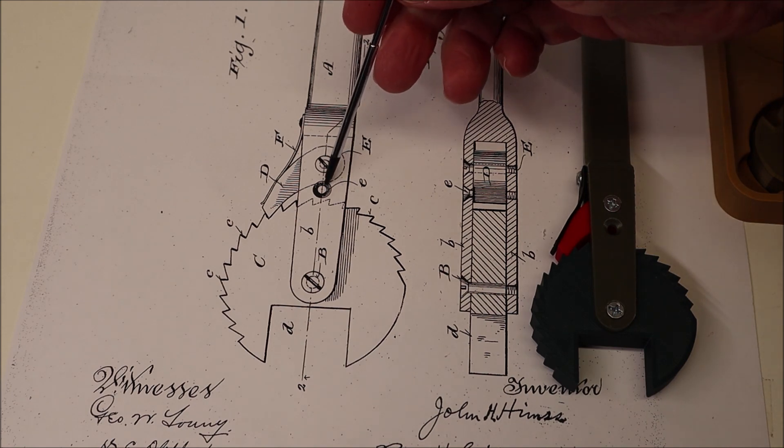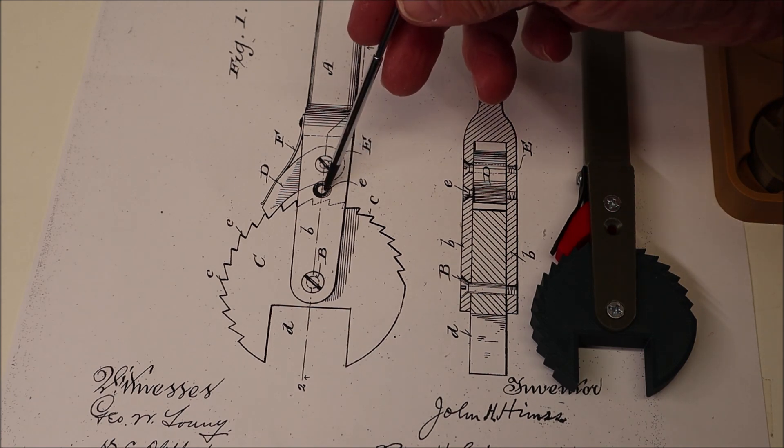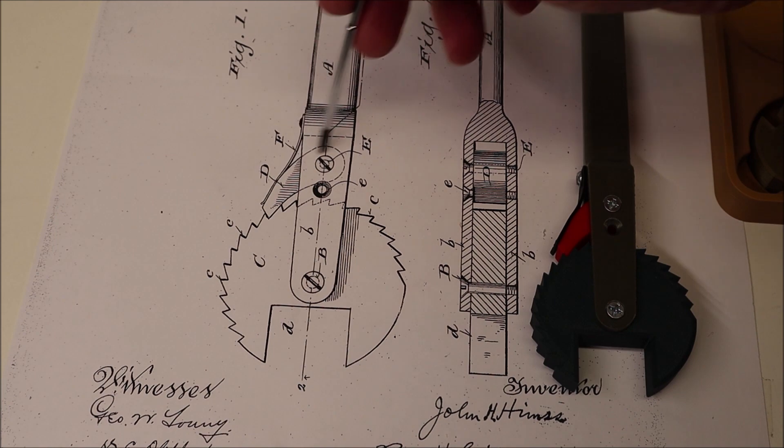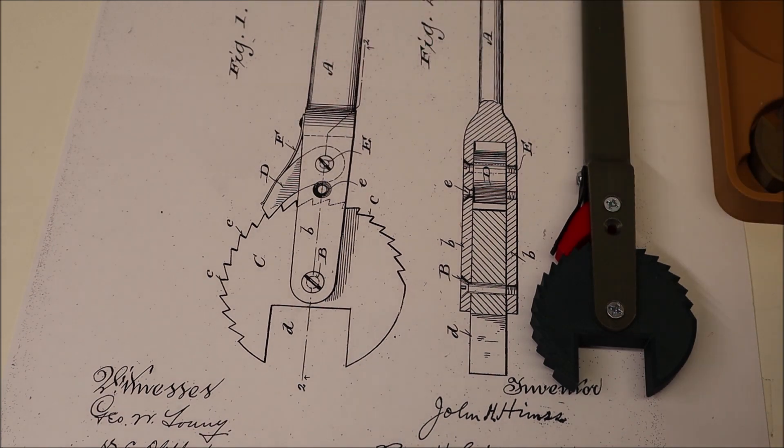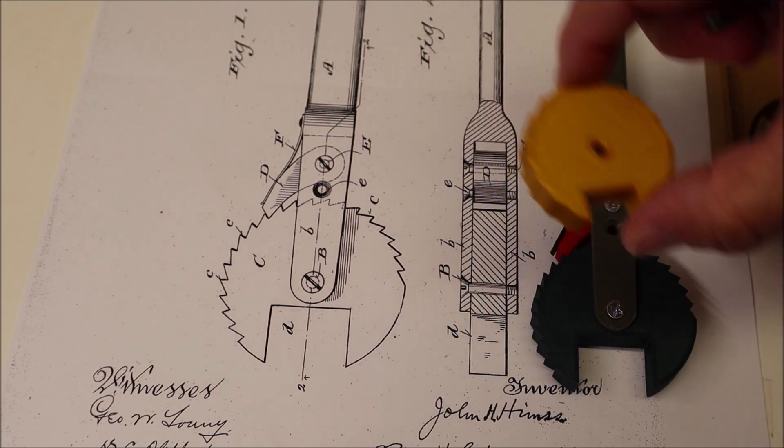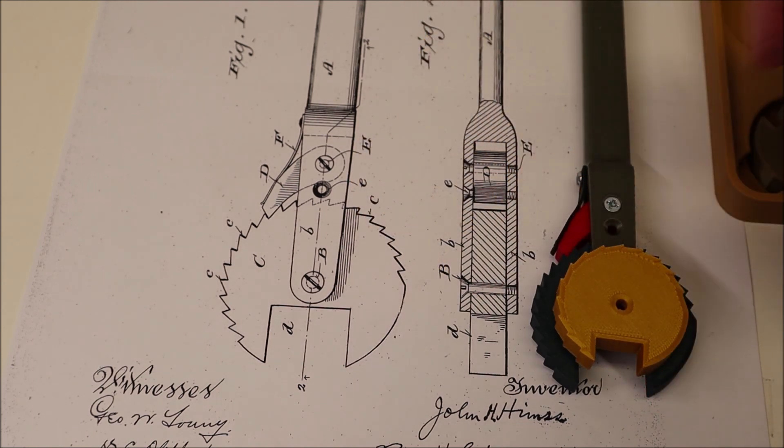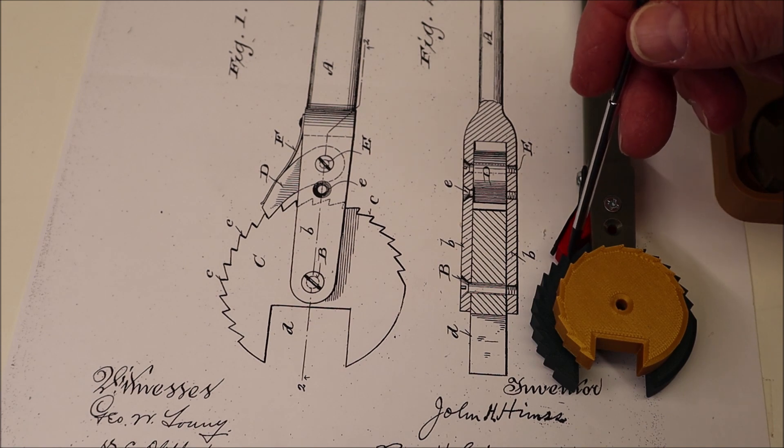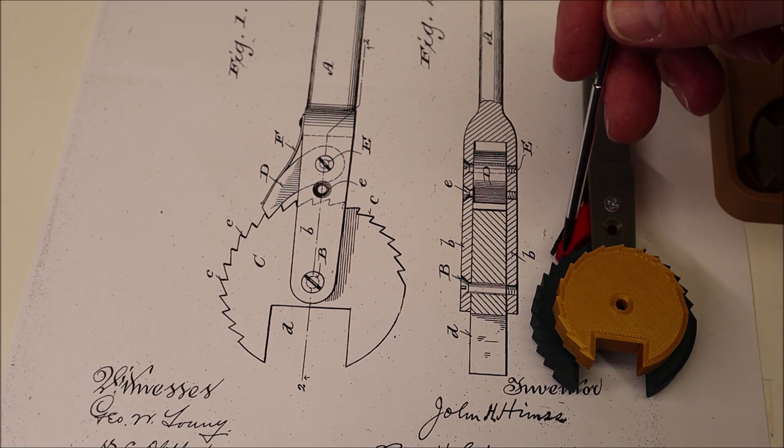There's another screw position here E and this is so you can move this pawl forward and you can use a smaller disc on the wrench. And then the pawl would be moved forward to engage with the ratchet teeth.